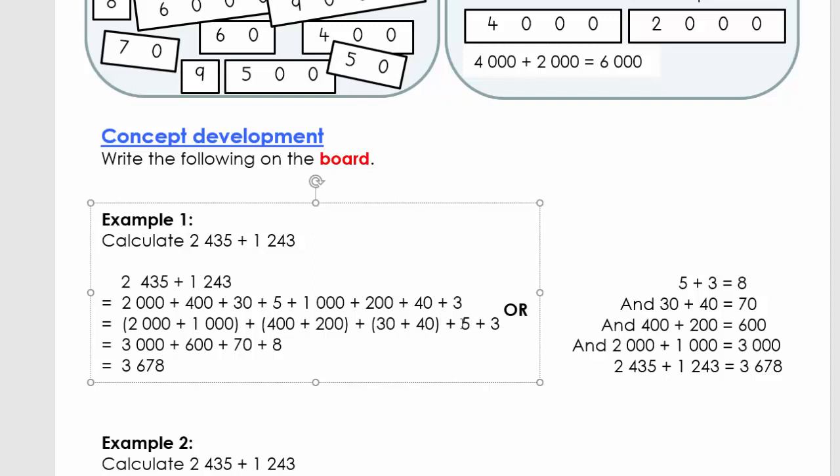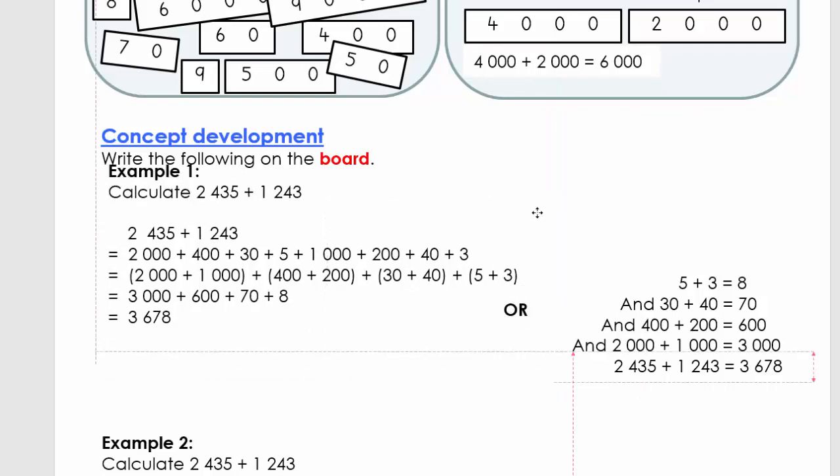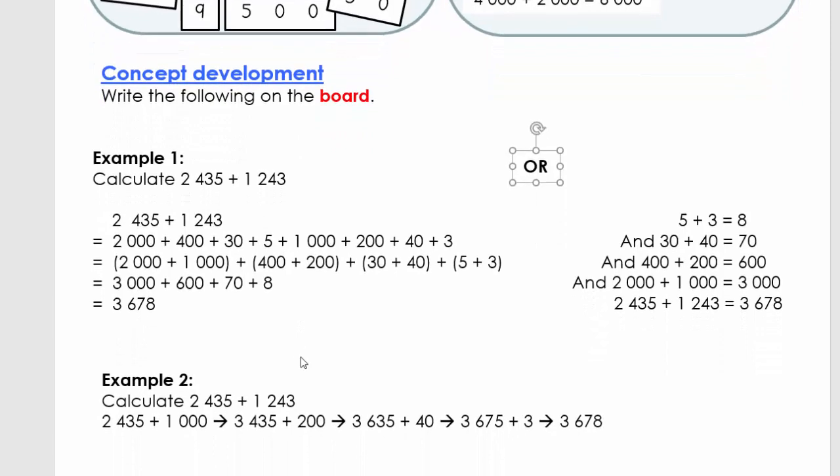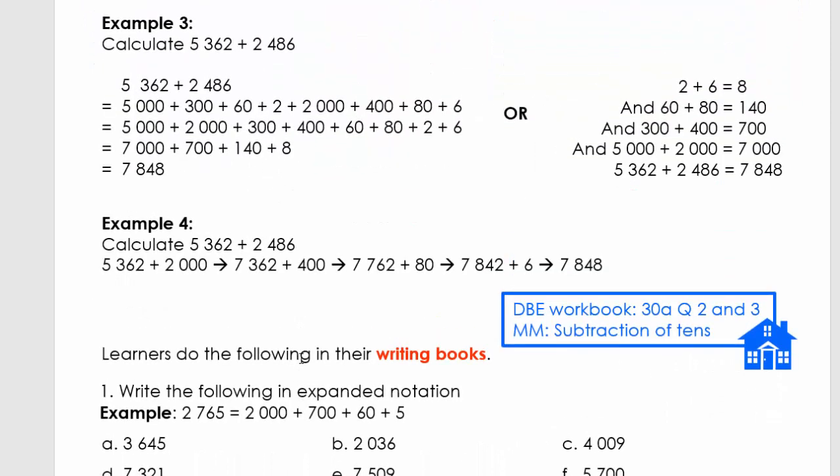Here we have the units. Now, 2000 plus 1000 is 3000, 400 plus 200 is 600, 30 plus 40 is 70, and 5 plus 3 is 8. Now we can use our place value skills and add the numbers, so we get 3678. Let's scroll down to the next example.